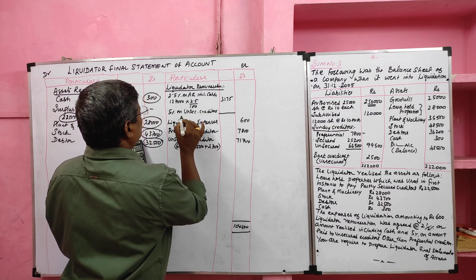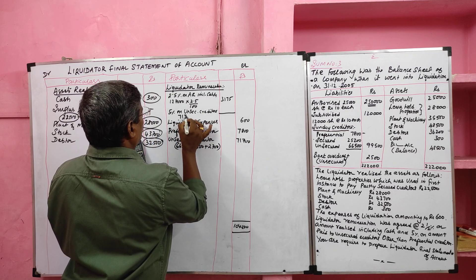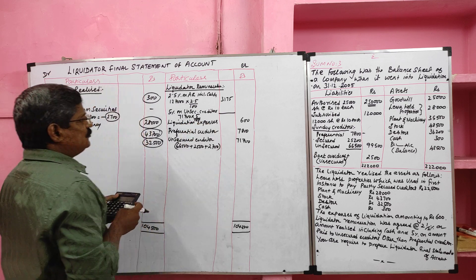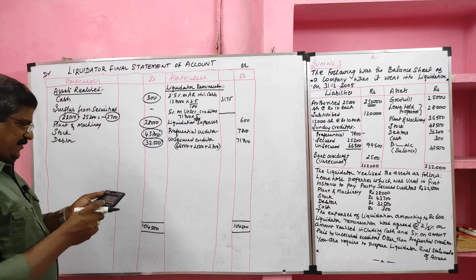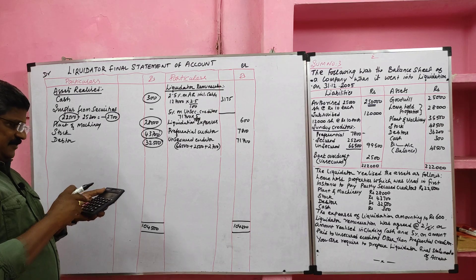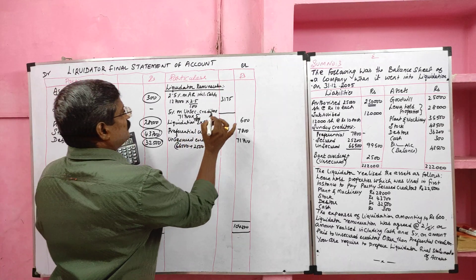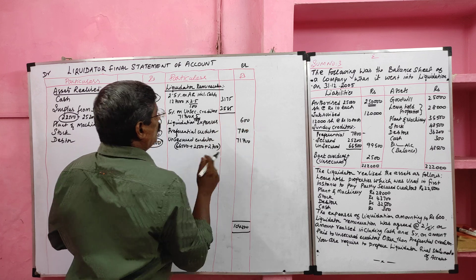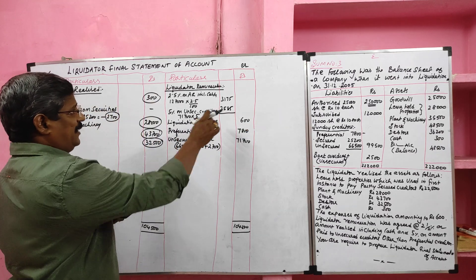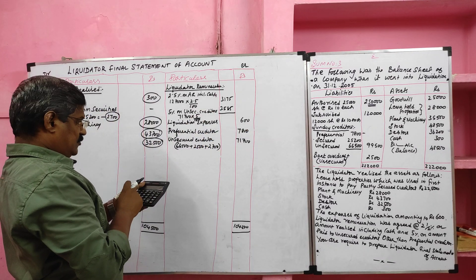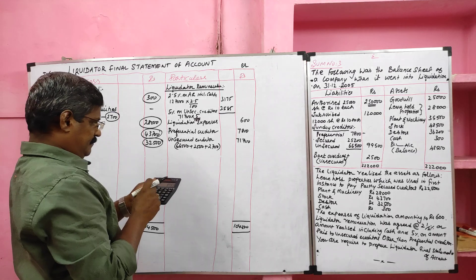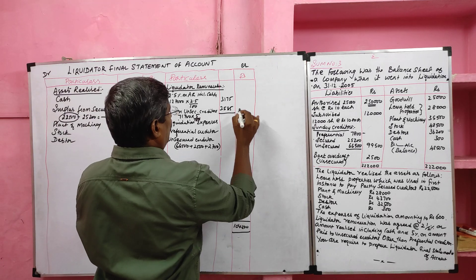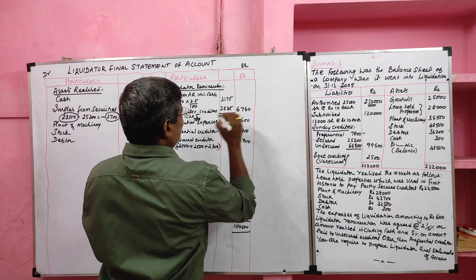On the total unsecured creditor amount of rupees 71,700, we pay 5 percent commission: 71,700 multiplied by 5 percent equals rupees 3,585. Adding both components: 3,175 plus 3,585 gives total remuneration payable to the liquidator of rupees 6,760.